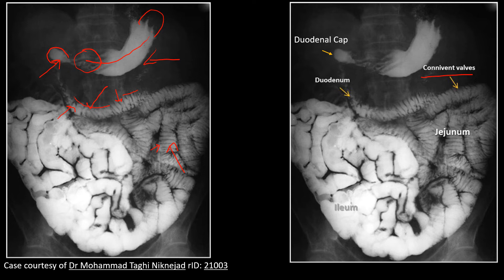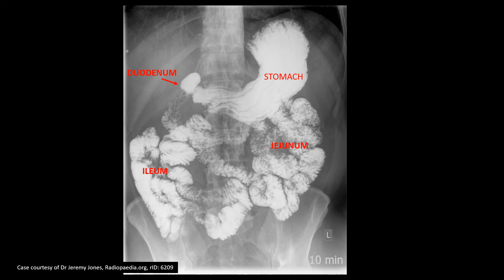The terminal part of the ileum is comparatively without such mucosal folds and does not show such plicae circulares. In this image, we can again see the shadow of the stomach, the pyloric part, the duodenal cap, the second part of the duodenum, and the third part of the duodenum with plicae circulares. Here is the duodenojejunal flexure, this is the loop of the jejunum, and this is the ileum.